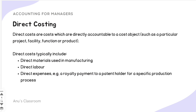Direct costs are those costs which are directly accountable to a cost object. They include costs associated with materials used in manufacturing, labor (your employees), and direct expenses like paying royalties to a patent holder for a specific production process. Costs which cannot be associated with such things are called indirect costs.